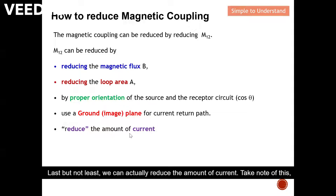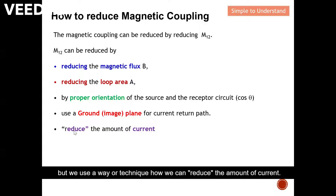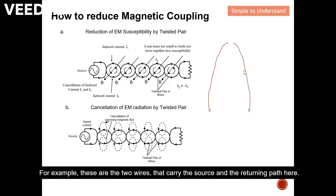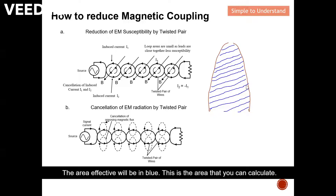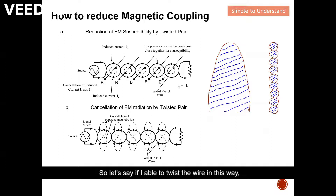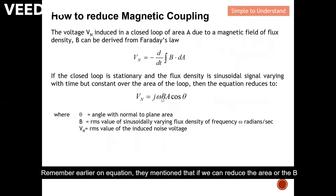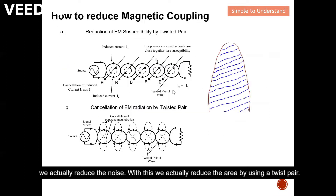Last but not least, we can actually reduce the amount of current. Now, how can we reduce the area? Take a look at this diagram. These are two wires carrying the source current and the return path. The area can be calculated as shown. If I am able to twist the wire in this way, you can see that the effective area actually reduces — many times reduced compared to the original form. Remember from the equation: if we reduce the area, we actually reduce the noise. With this twist, we reduce the area.